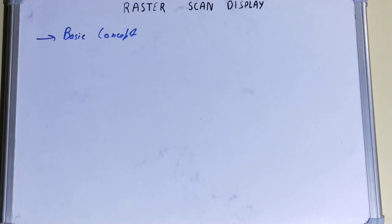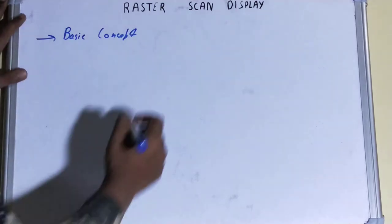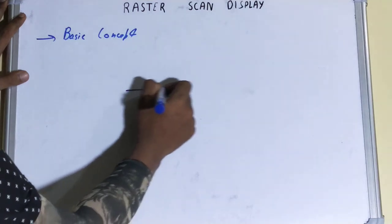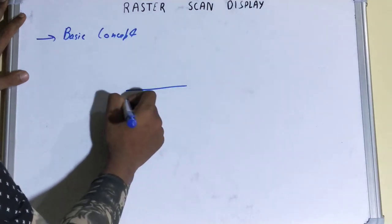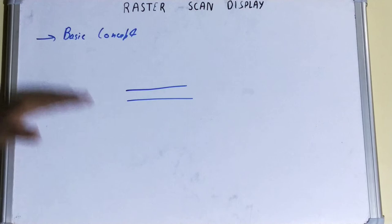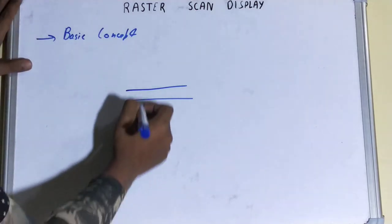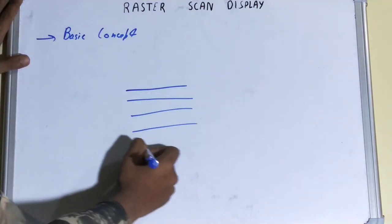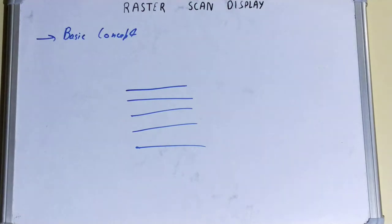The electron beam in a raster scan system is swept across the screen one row at a time from top to bottom. So the electron beam in your raster scan display goes one row at a time, scanning from top to bottom. The last row will be scanned at the last.